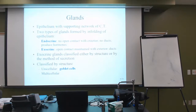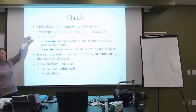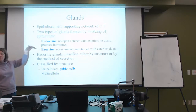The ducts — D-U-C-T-S — lead to the outside environment. The outside environment is very harsh to us. The goal is for this tissue type and these cells to help keep stuff out, as the epithelium lines the outside environment.